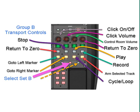On the rotary knobs, the first rotary knob on Set B will be your click on and off — you just turn it to turn your metronome or click on and off. The second knob will be the volume control for the metronome, so you can turn it up and down. The third knob will be for the control room volume if you use that. The fourth knob is not being used.